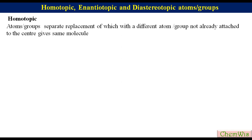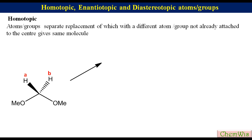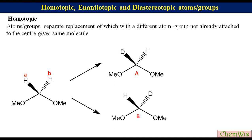Let's take the example of dimethoxymethane. Here, we have to find the relation between two hydrogens A and B. For this, just replace A and B one by one with a different atom, say deuterium. Replacement of HA with deuterium gives structure A, while replacement of HB with deuterium gives structure B. We can see that structures A and B are the same, so HA and HB are homotopic atoms.